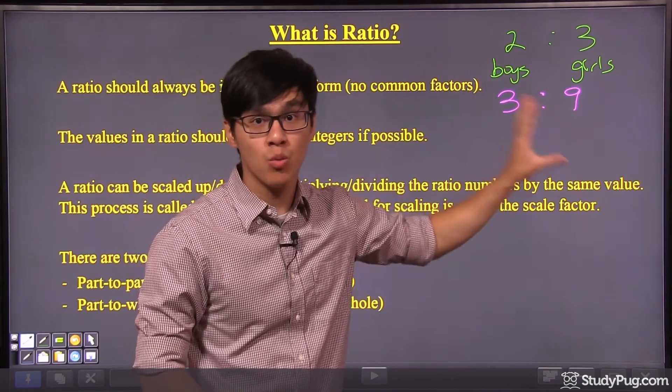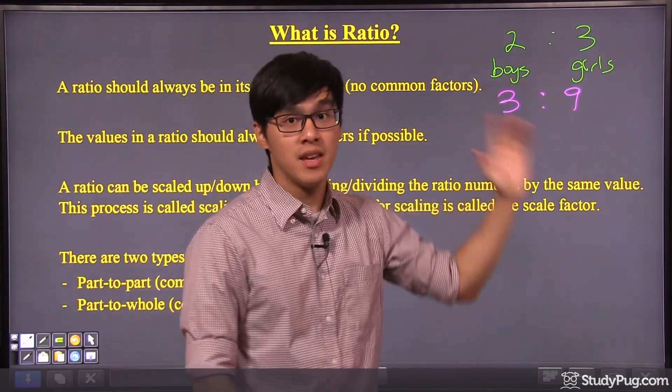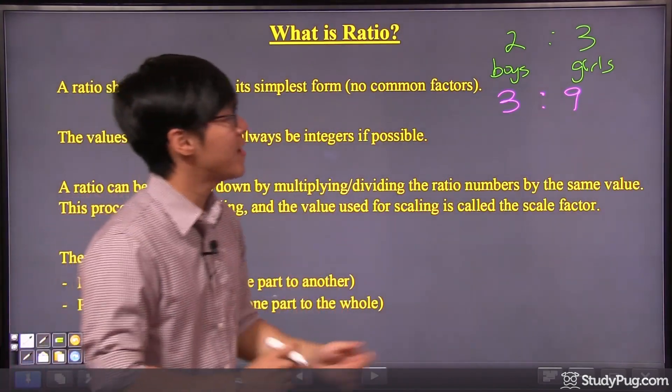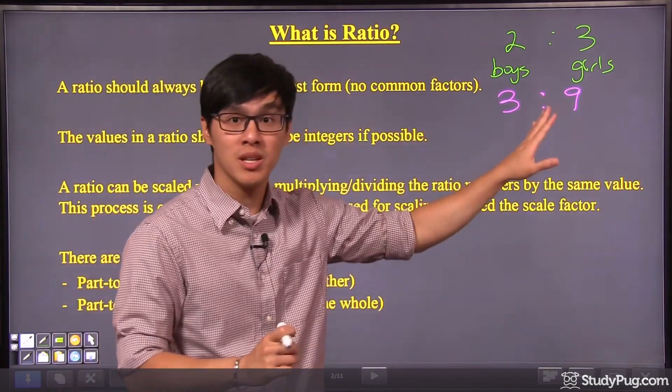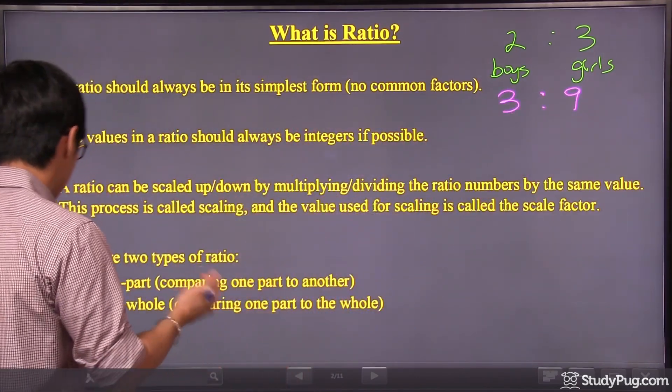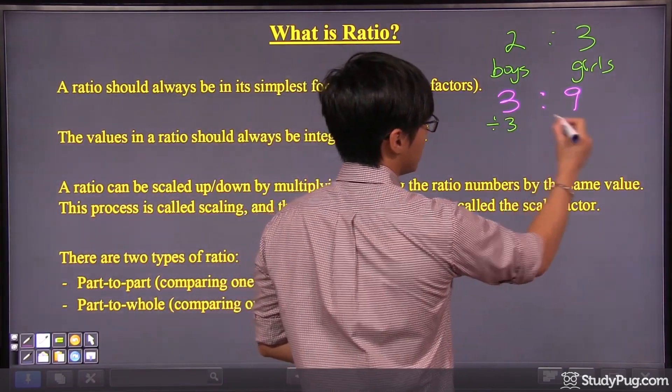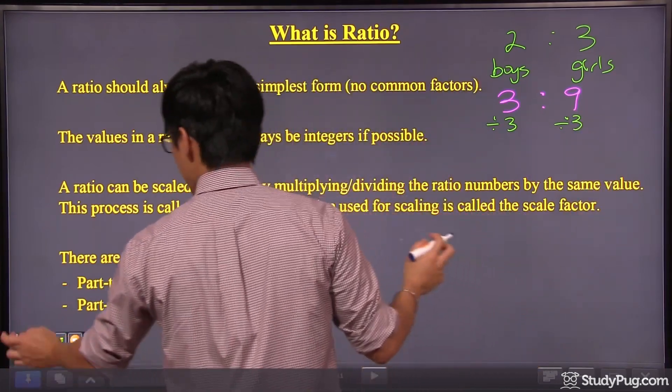However, there might be times when you have numbers, let's say, three boys to nine girls. This is a ratio as well, but look at the numbers three and nine. They have a common factor. The common factor is three. Meaning that we can divide both numbers by three to get a simpler form.